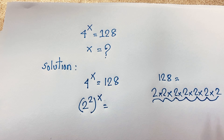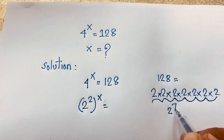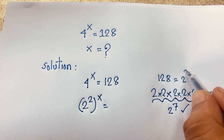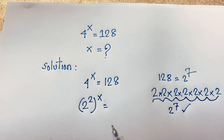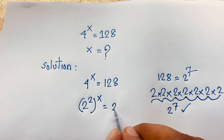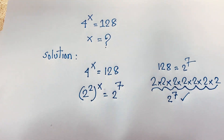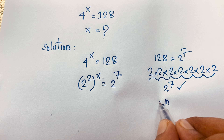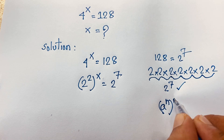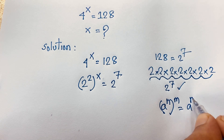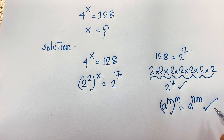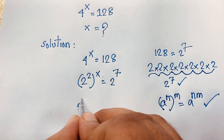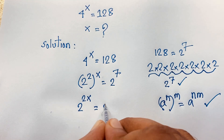So 128 is equal to 2 to the power 7. Now, according to the exponential formula, a to the power n, bracket to the power m, equals a to the power n×m. So (2^2)^x becomes 2 to the power 2x.